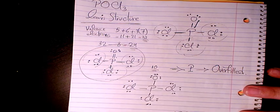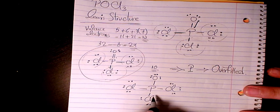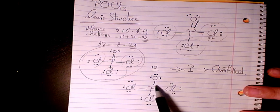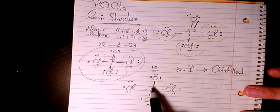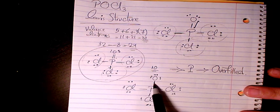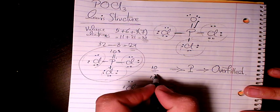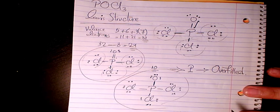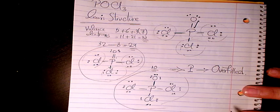We connect these with a single bond between phosphorus and oxygen. In this case the octet rule is satisfied for all elements. For oxygen, with the single bond it becomes eight electrons, satisfying the octet rule. For phosphorus we have four bonds times two equals eight, so the octet rule is valid for all of them in this case.